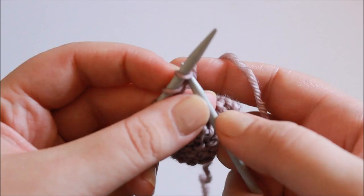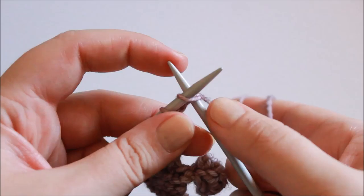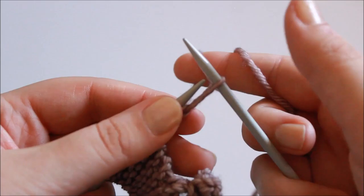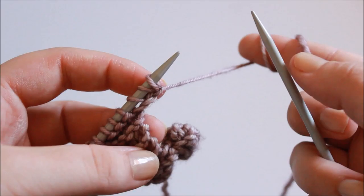Do that one more time to cast on the second stitch. Knit into next stitch, which is now the first stitch that we cast on, don't slip it from the left hand needle, put the new loop on your right hand needle onto the left hand needle, and we've cast on two stitches.